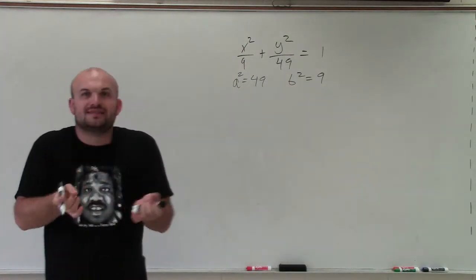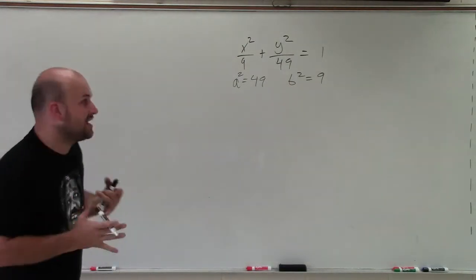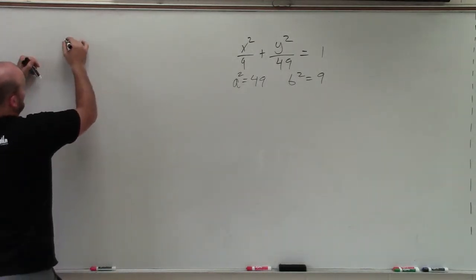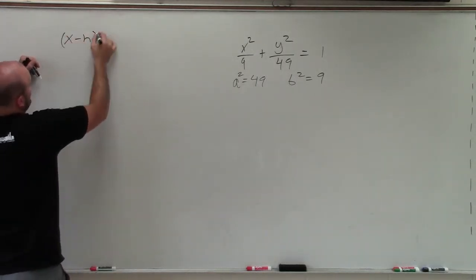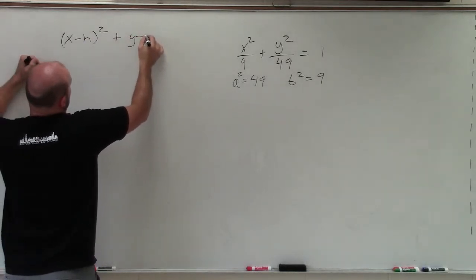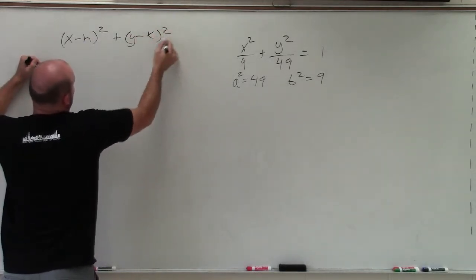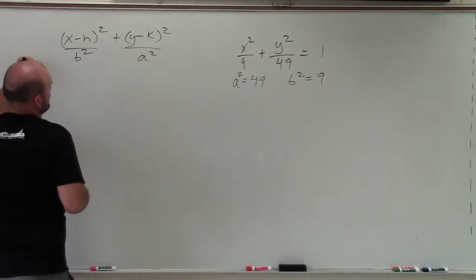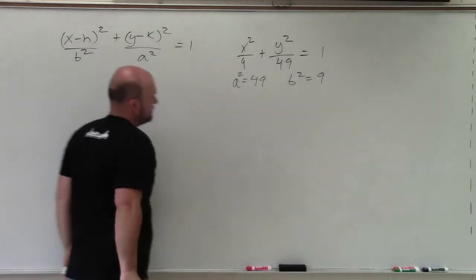So when dealing with an ellipse, the larger value is always going to be your a squared. Knowing that information, now I can write in and say, all right, well, x minus h squared plus y minus k squared, where I said a squared was under the y, and b squared was under the x. Equals 1.